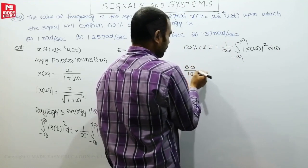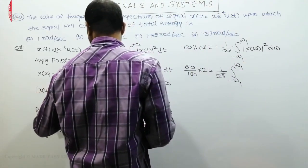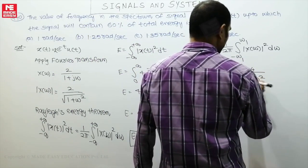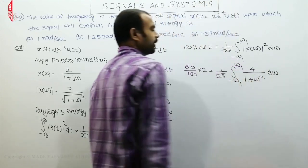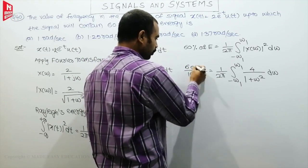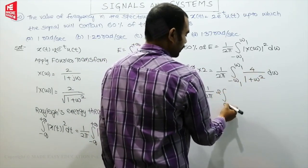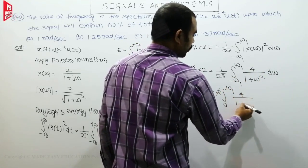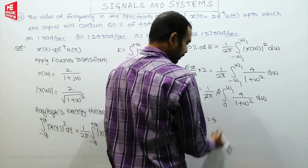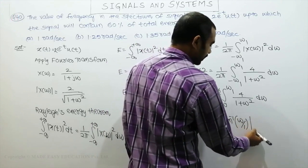60% of 2 = 1.2. So: 1.2 = (1/2π) integral from −ω₁ to ω₁ of [4/(1+ω²)] dω. Since this is an even function, we write 2 times the integral from 0 to ω₁. The 2s cancel, leaving (1/2π) times 4 times tan⁻¹(ω), evaluated from 0 to ω₁.